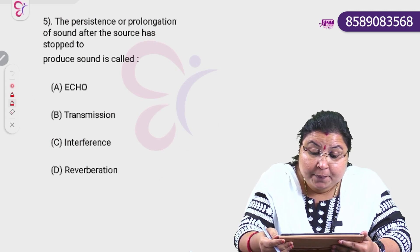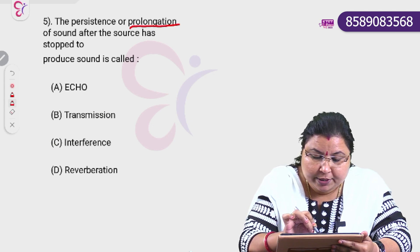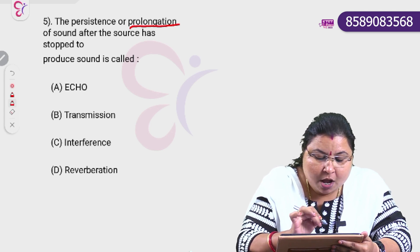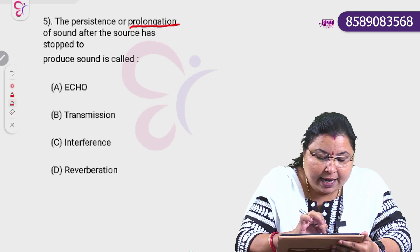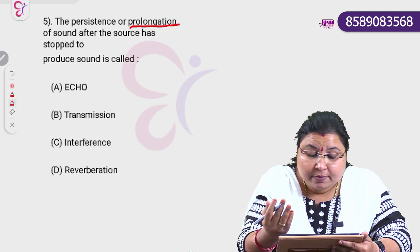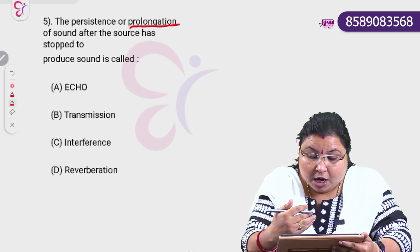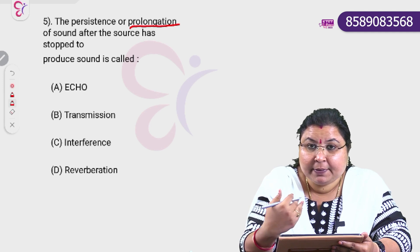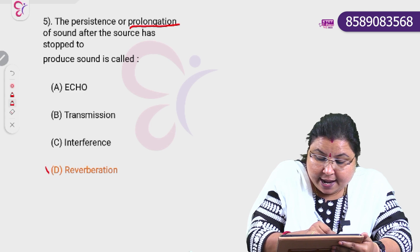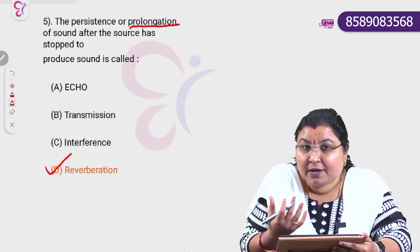The persistence or prolongation of sound after the source has stopped is known as — option A: echo, option B: transmission, option C: interference, and option D: reverberation. The correct answer is D — reverberation, which involves multiple reflections.